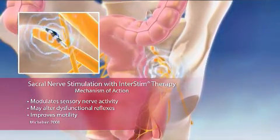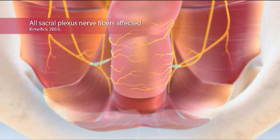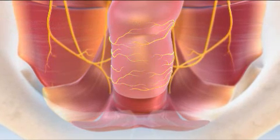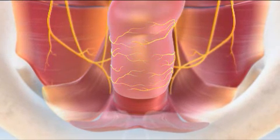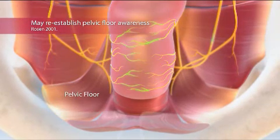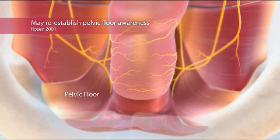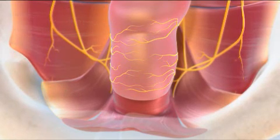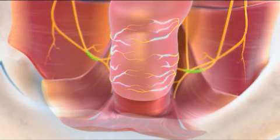Another theory involves neuromodulation of all the nerve fibers within the sacral plexus, including somatic fibers to the external anal sphincter and pelvic floor, autonomic fibers to the internal anal sphincter and distal colon, and afferent sensory fibers from the anus and rectum. During sacral nerve stimulation studies, some patients appeared to reestablish an awareness of their pelvic floor muscle. In several cases, this allowed them to consciously relax and contract their muscles, and the renewed sensory function may have helped to improve the voluntary aspect of continence.